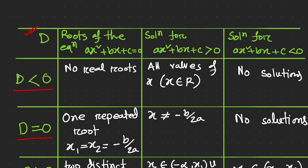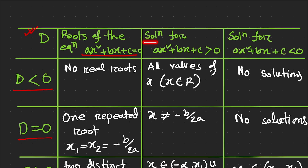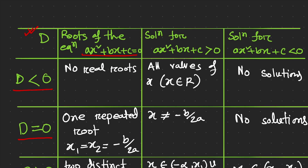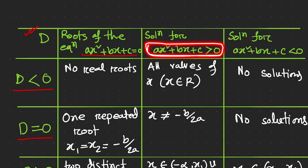When the discriminant is less than zero, the quadratic equation ax² + bx + c = 0 has no real roots. For the inequality ax² + bx + c > 0, there are two possible combinations of inequalities using quadratic expressions: greater than zero or less than zero. In the first case, when the quadratic expression is greater than zero and D < 0, all values of x are solutions.